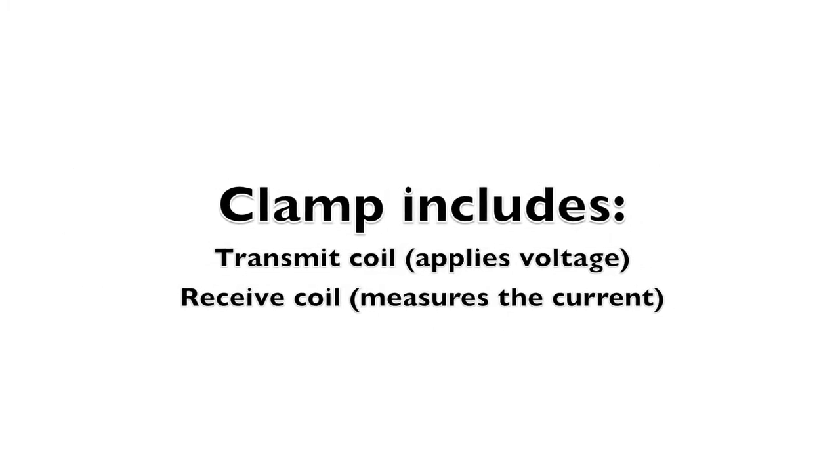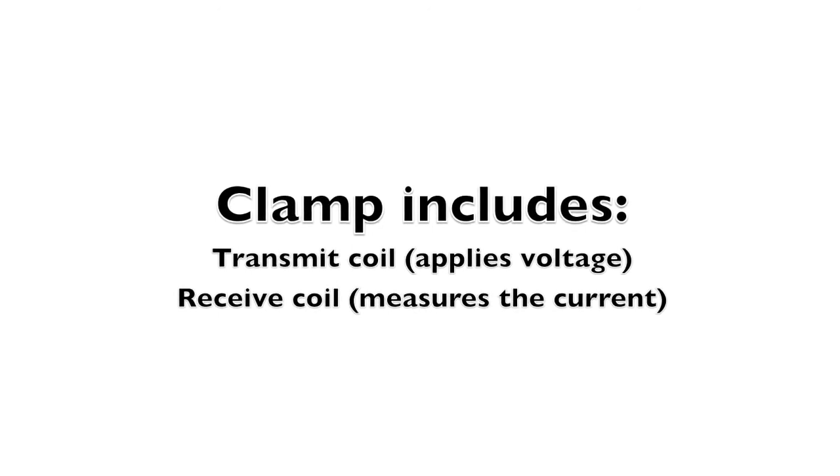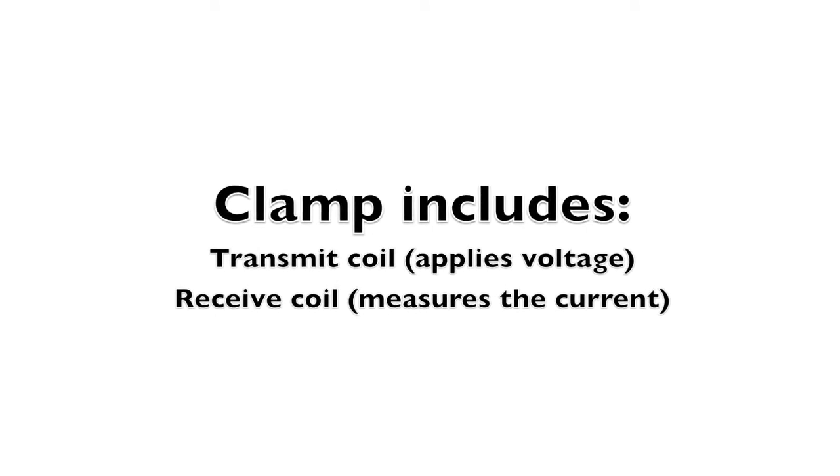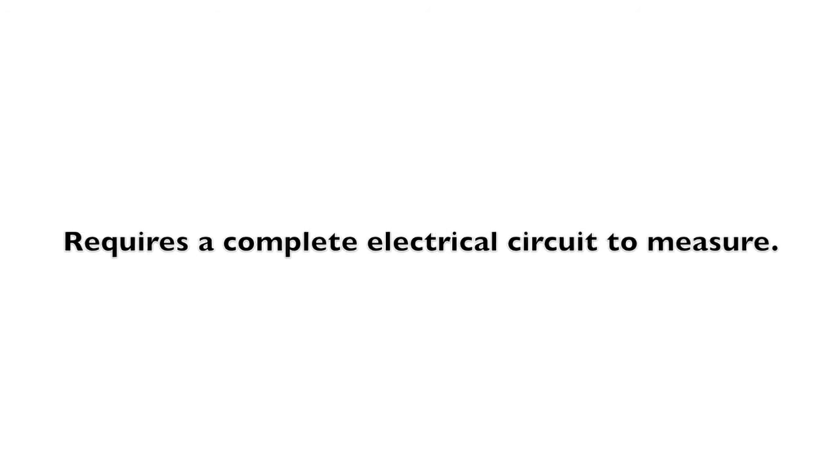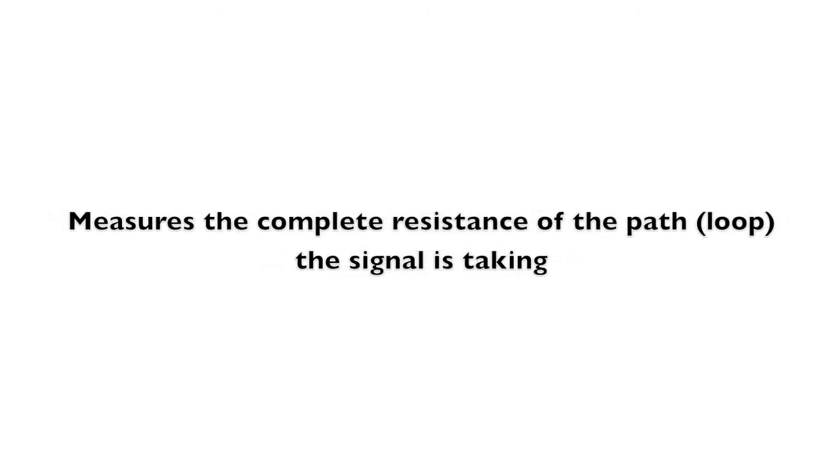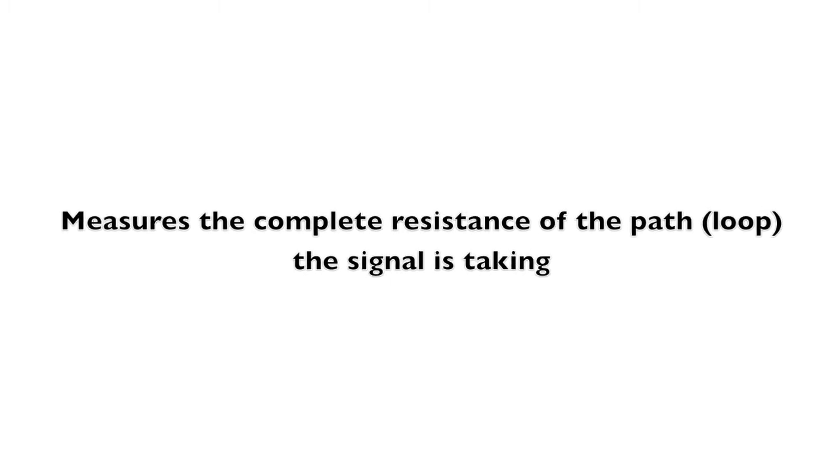The clamp houses two inductive coils, one to establish test current and the other to sense voltage drop. The tester must be able to find a current path back to the jaws in order to make a measurement. With a return path in place, the measurement will be a series loop resistance of the entire current path.